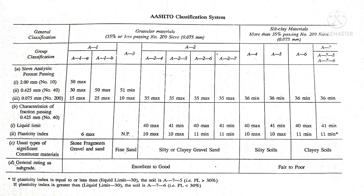To classify a soil, its particle size analysis is done and the plasticity index and liquid limit are determined. With the values of these parameters known, one examines the first — that is, the extreme left — column in this table and checks where the known parameters satisfy the limiting values in that column. If these satisfy the requirements, the soil is classified as A1a.